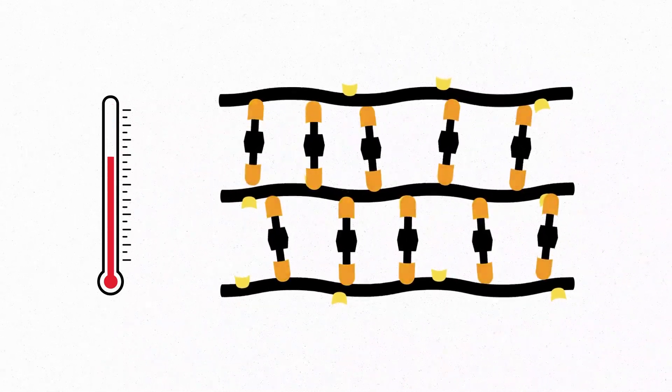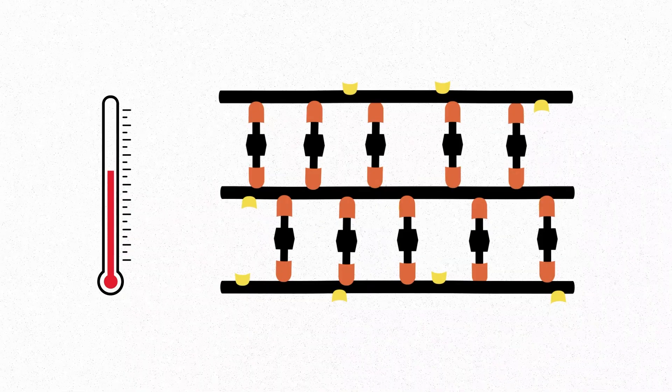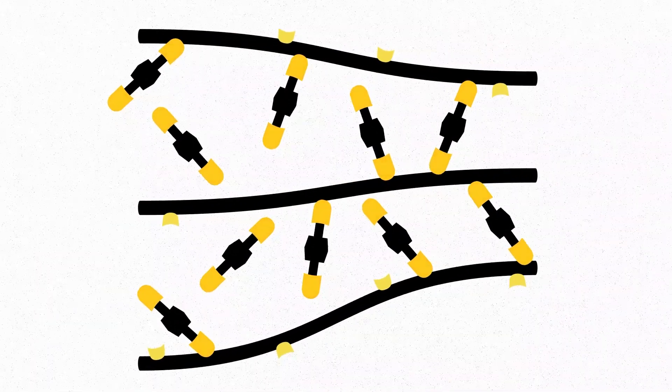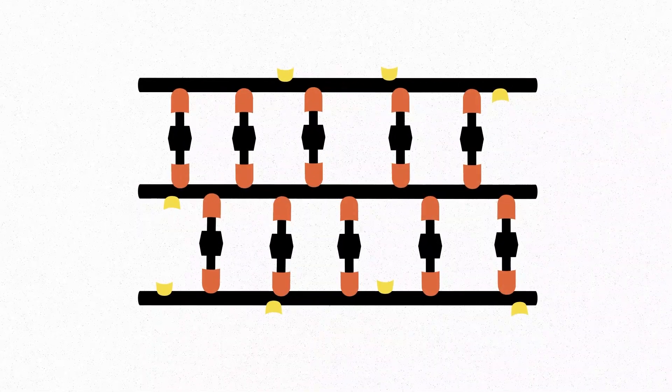But at lower temperatures, these molecules click together, cross-linking the polymer chains. And so, a tear in these materials at room temperature causes the molecules to click back together naturally, healing any damage, like magic.